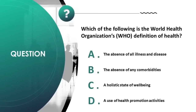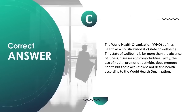Which of the following is the World Health Organization's definition of health? A) the absence of all illness and disease, B) the absence of any comorbidities, C) a holistic state of well-being, D) use of health promotion activities. Correct answer is C. The World Health Organization defines health as a holistic state of well-being, which is far more than the absence of illness, diseases, and comorbidities.